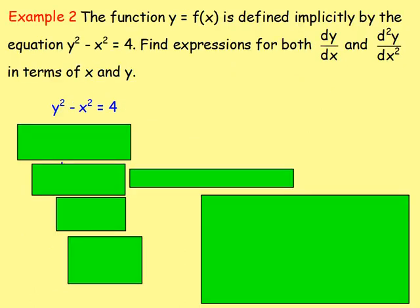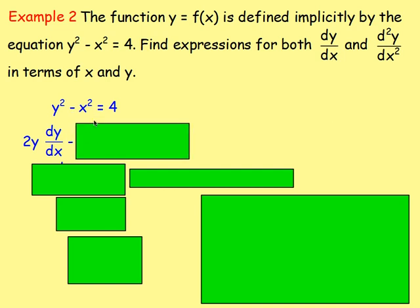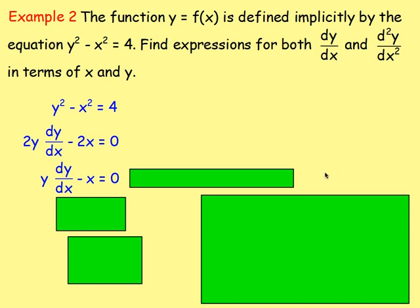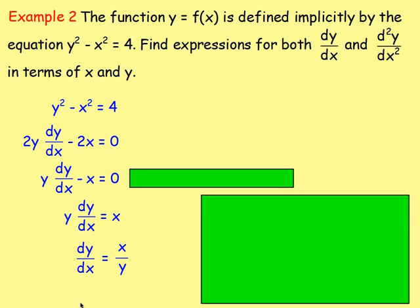Example 2: the function y equals f of x is defined implicitly by the equation y squared minus x squared equals 4. Find expressions for both dy by dx and d2y by dx squared in terms of x and y. Very similar to the last example. To get the first derivative, differentiate y squared minus x squared equals 4. Differentiating y squared gives 2y dy by dx. Differentiate x squared and you get 2x. Differentiate 4 and that's just 0. Each term divides by 2, so do that. Then add x to both sides: y dy by dx equals x. Divide both sides by y: dy by dx equals x over y. We've got our expression for dy by dx.